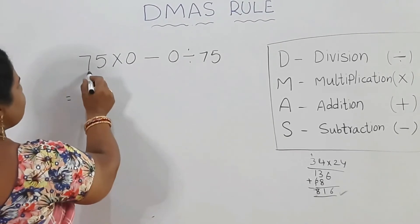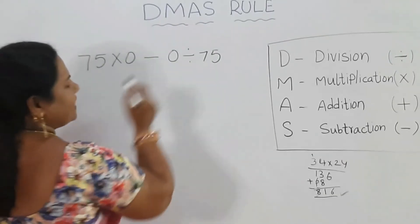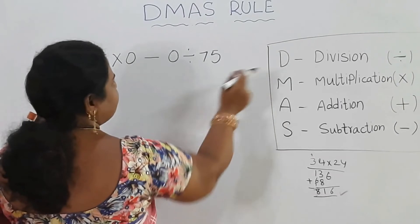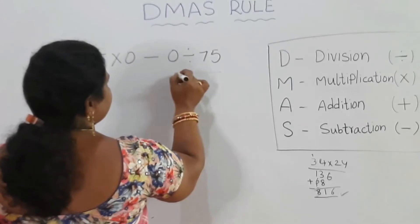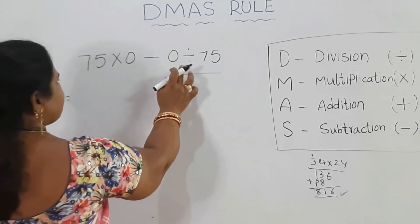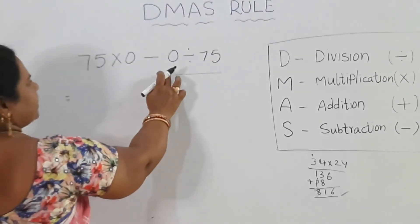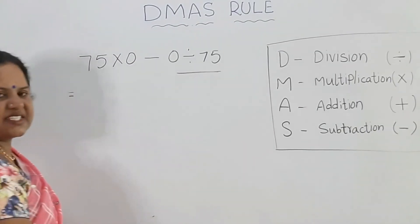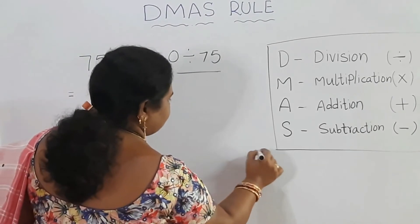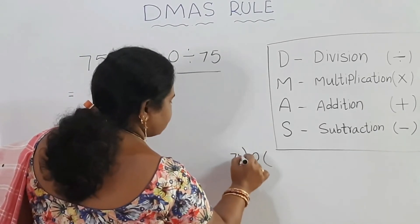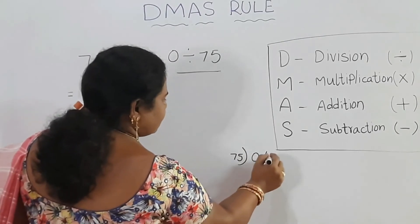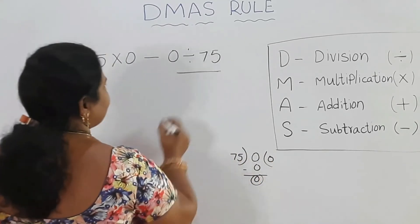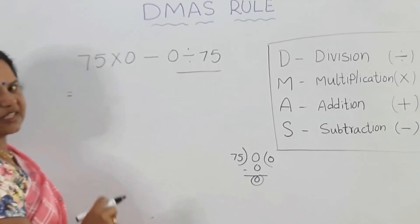Look here. Here we have one more example: 75 into 0 minus 0 divided by 75. First, division: 0 divided by 75. Zero divided by anything is equal to 0. So the division step gives us 0.